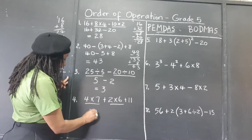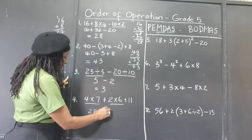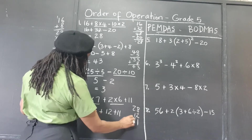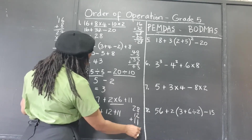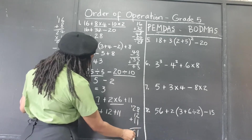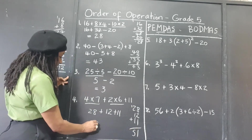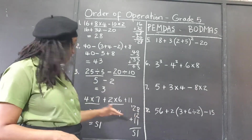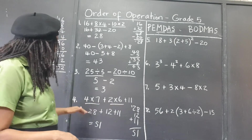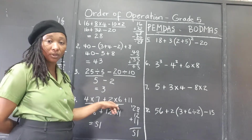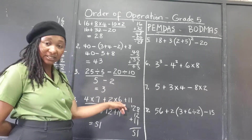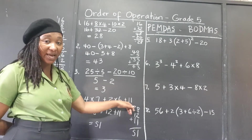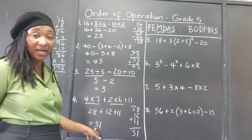4 times 7 is 28, and 2 times 6 is 12, plus 11. So we have 28, 12, and 11. Adding those: our final answer is 51. Suppose we had just gone straight ahead as given: 28 plus 2 is 30, times 6 is 180, plus 11 is 191 — a totally different answer from 51.